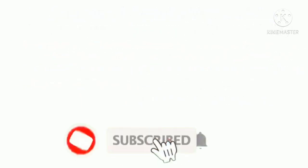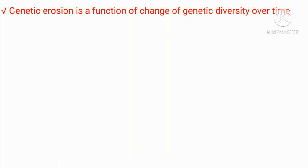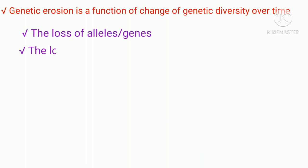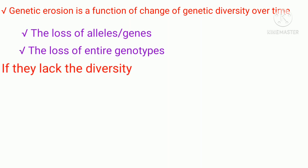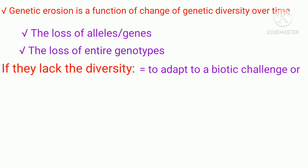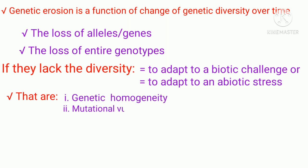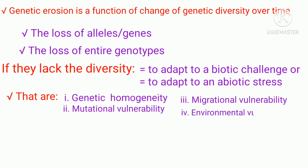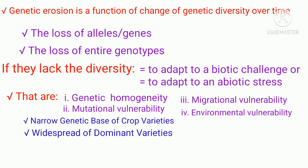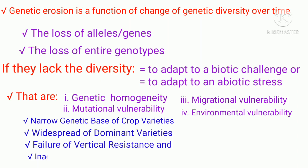In conclusion: genetic erosion is a function of change of genetic diversity over time, with two types — loss of alleles or genes, and loss of entire genotypes. A population of a crop species is genetically vulnerable if it lacks diversity to adapt to biotic challenges or abiotic stresses. There are four kinds of genetic vulnerability: genetic homogeneity, mutational vulnerability, migrational vulnerability, and environmental vulnerability. The major causes of genetic vulnerability are narrow genetic base of crop varieties, wide spread of dominant varieties, failure of vertical resistance, and inadvertent breeding for susceptibility.